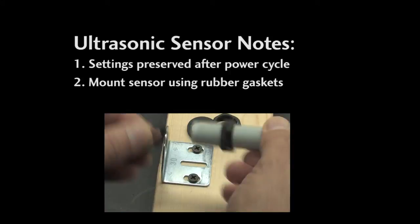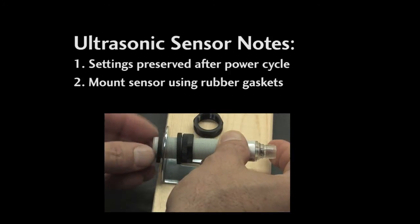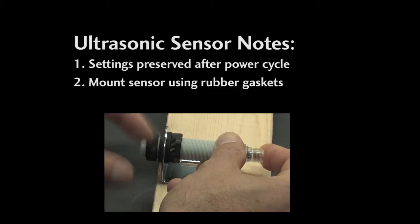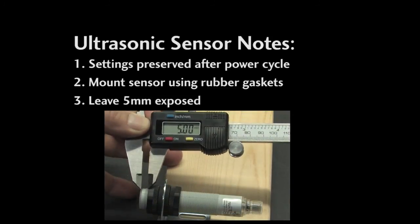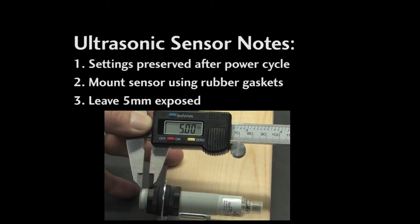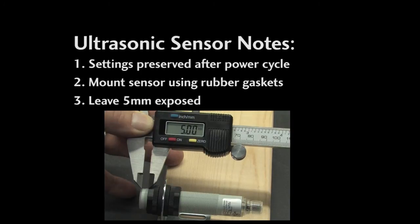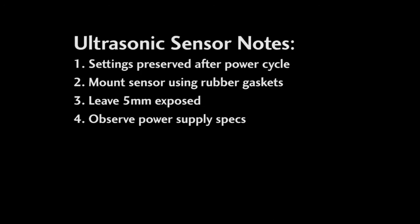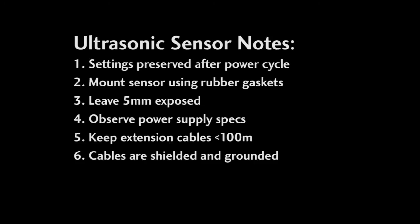A few notes – these settings are preserved even if the sensor is powered down. Make sure you mount the sensor with the provided rubber gaskets – they help provide vibration isolation. Also, make sure you leave about 5 millimeters of the housing exposed below the face of the sensor – so don't mount the sensor flush to the panel. Make sure the power supply meets the specs in the datasheet, the cable extensions are kept below 100 meters, and that the cables are shielded and grounded to help prevent electrical noise issues.